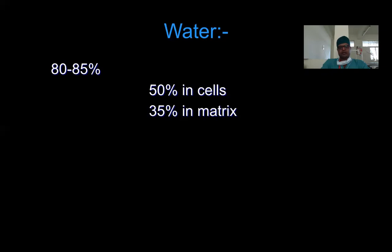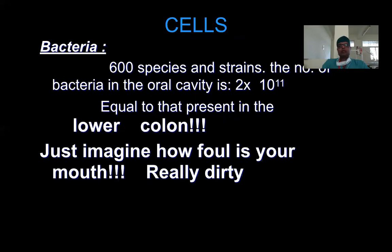Water forms around 80–85% of all plaque. Of that, about 50% is within the cells and the remaining 35% is in the matrix. Water is very important — without it, plaque would dry out. The most common cells in any dental plaque are plaque bacteria. There are a minimum of 600 different species, plus different strains of those species. The total number of bacteria at any given point is 2×10^10.